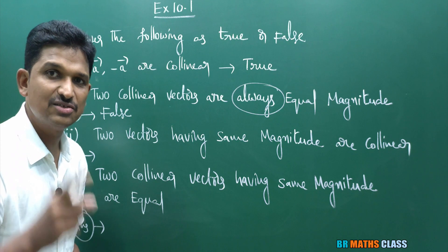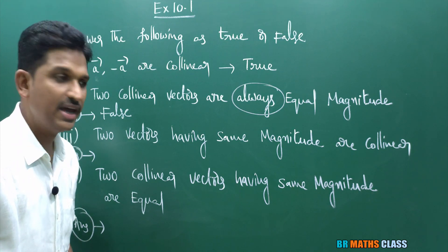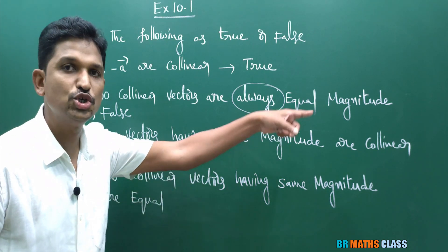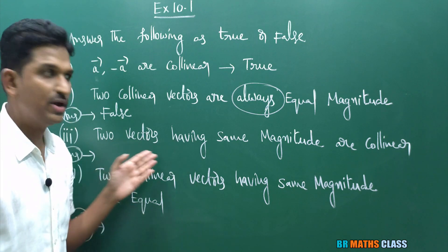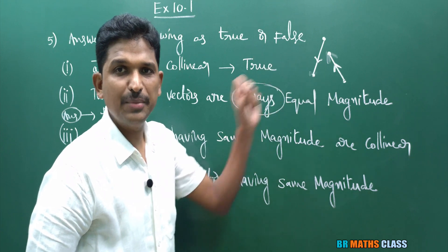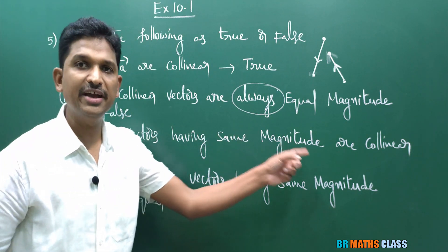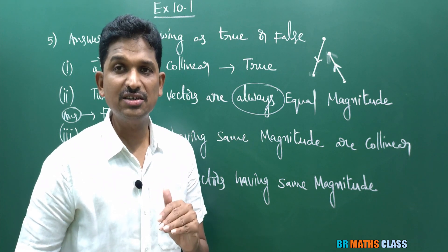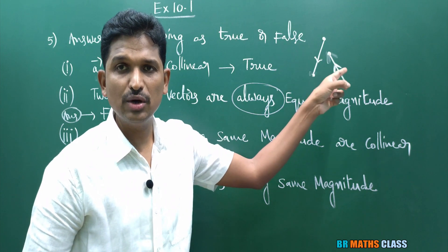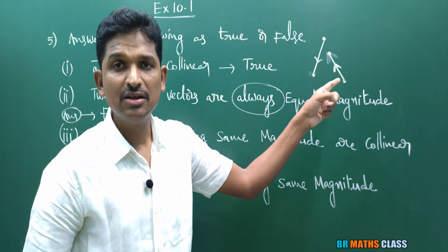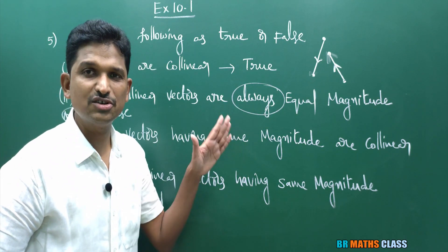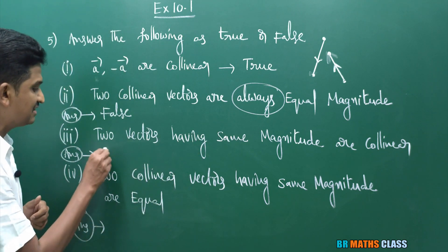Third statement: two vectors having the same magnitude are collinear. Collinear means vectors which lie on the same line or on parallel lines. Even if two vectors have equal magnitude, they may not be parallel. So two vectors having the same magnitude are not necessarily collinear. This statement is 100% wrong — it is false.